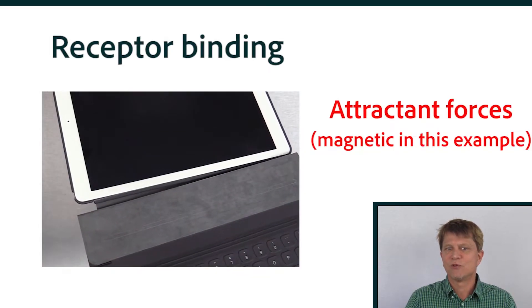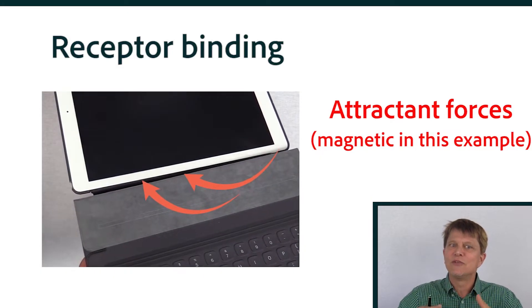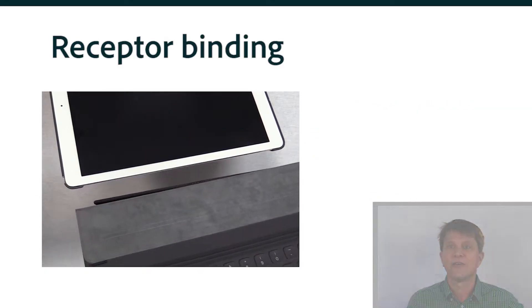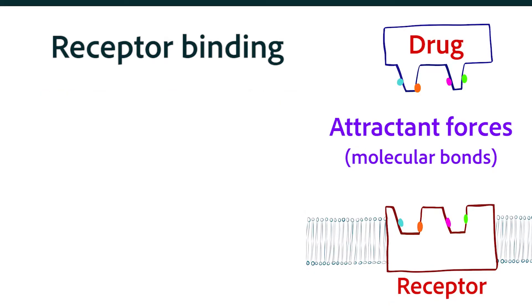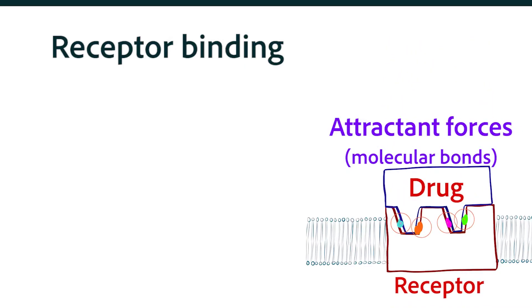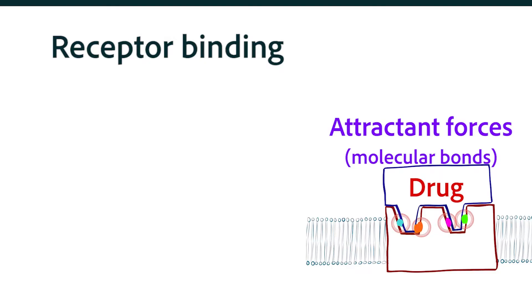I like to use the analogy of modern electronic devices with snap-in features. When the accessory comes into close proximity to the receptor, magnetic forces guide the accessory into place and they snap together. Applying that analogy to medications, the molecular properties of the drug have various attractant forces to the molecular properties of the receptor. The drug is attracted to the receptor, and just like the accessory binding to the electronic device, most drug-receptor binding is not permanent.